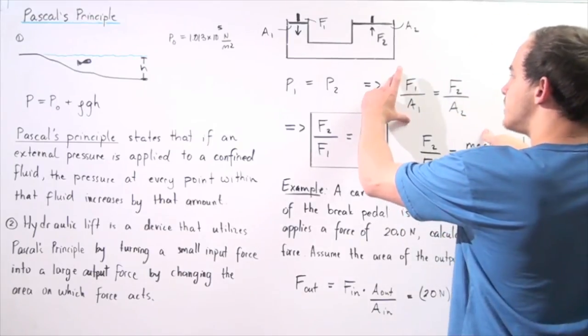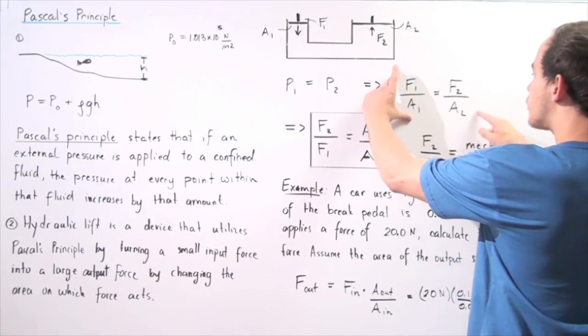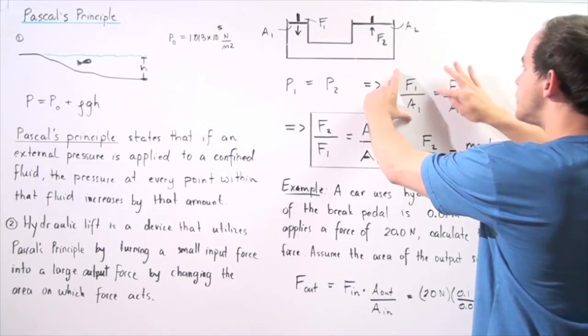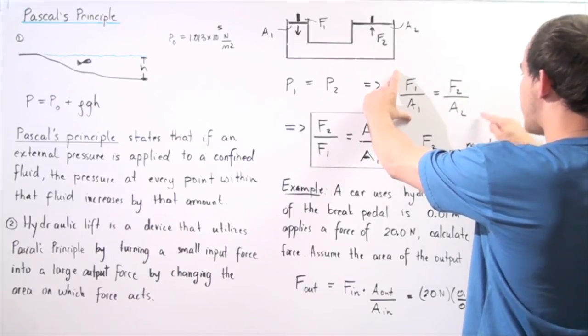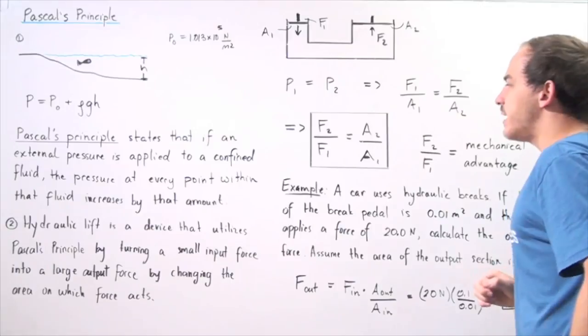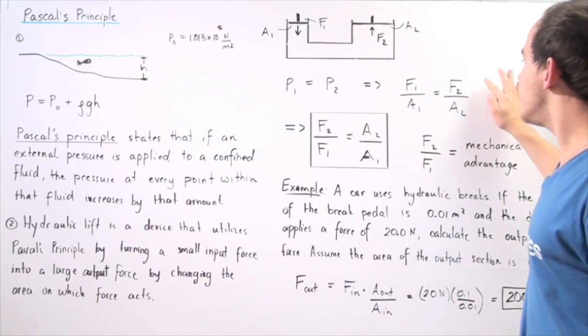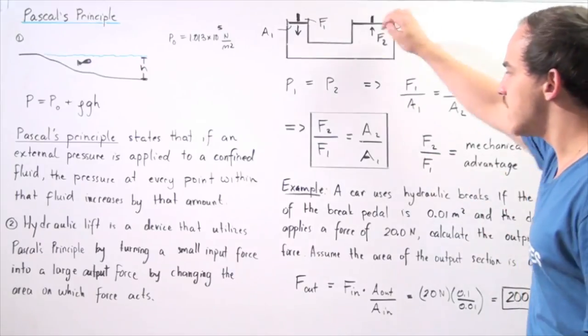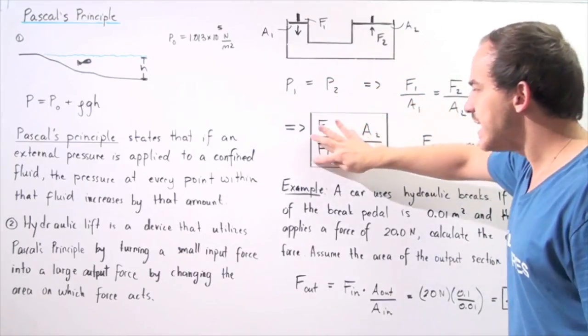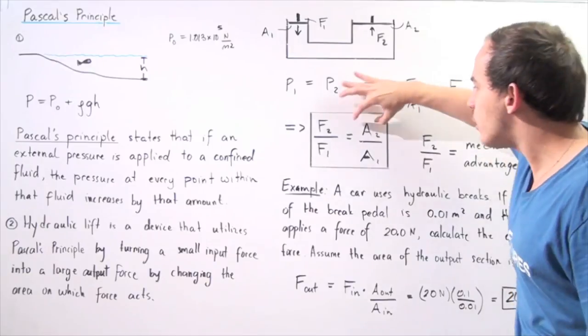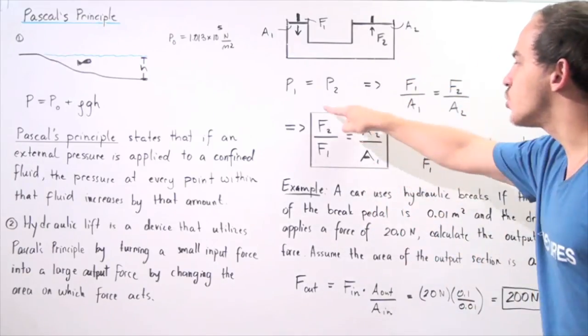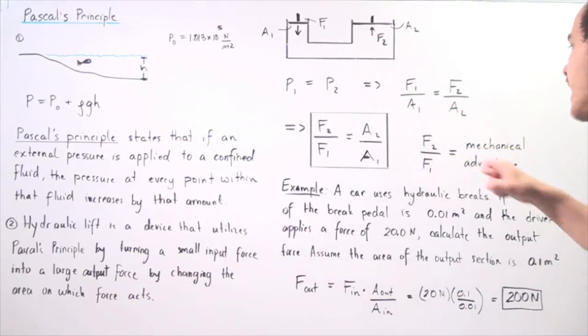As long as these two quantities remain constant and we increase A2, then F2 has to increase by that same amount. We can rearrange this equation and get the following result: the output force divided by the input force is equal to the output area divided by the input area. This quantity F2 divided by F1 is known as our mechanical advantage.